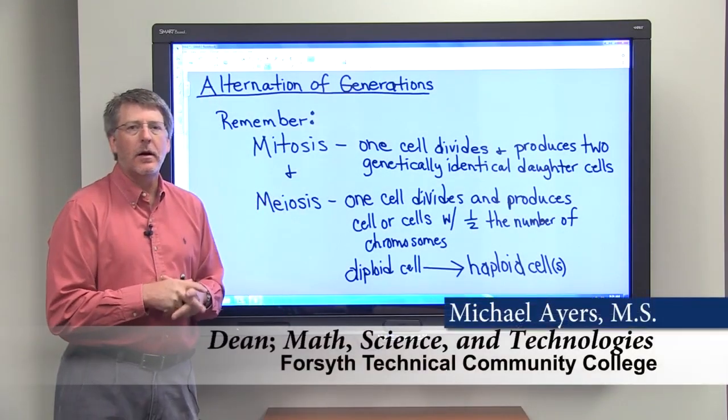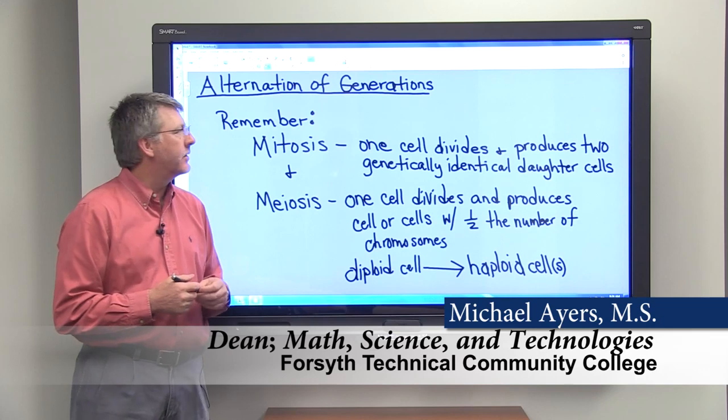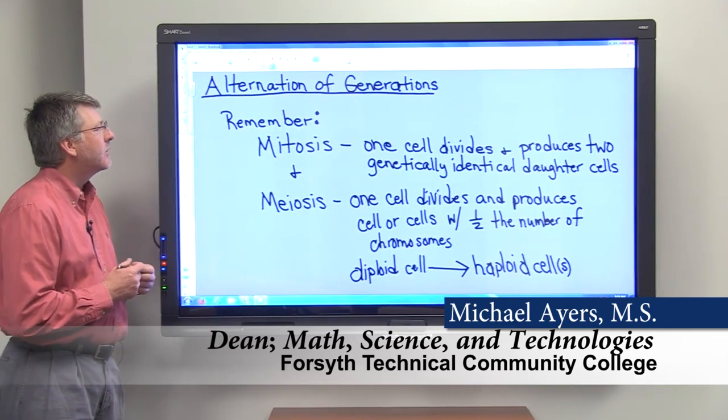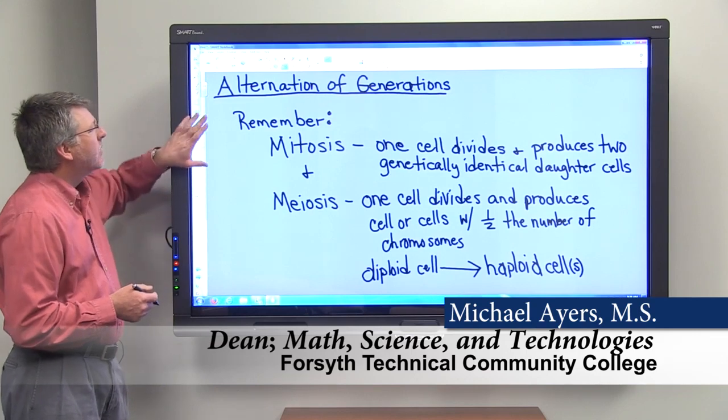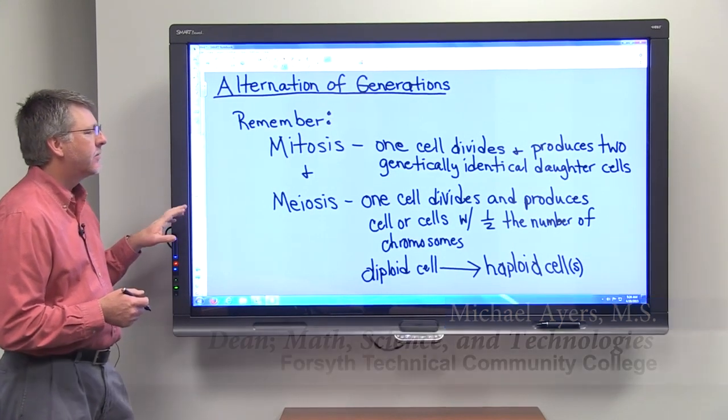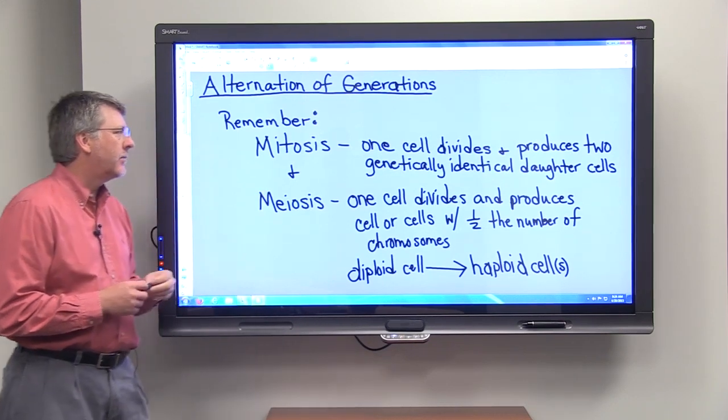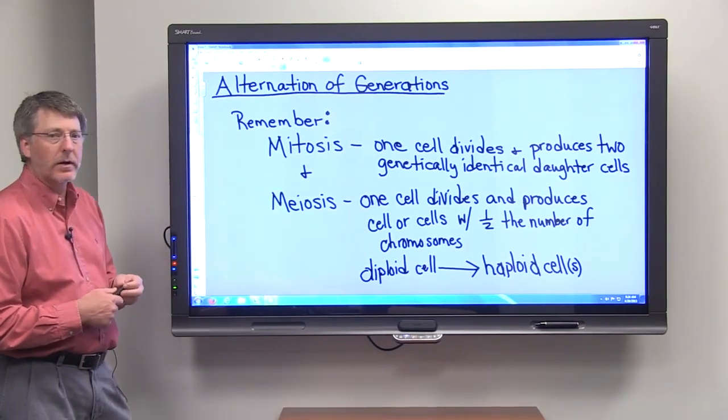So let's talk about alternation of generations, which is something that is unique to plants and some protists. With alternation of generations, it's very important that you remember how mitosis and meiosis work. So here's a quick review.